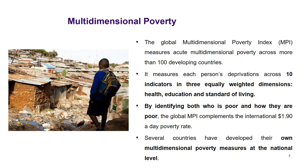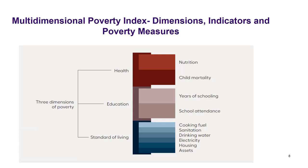By identifying both who is poor and how they are poor, the global MPI complements the international $1.90 a day poverty rate. Several countries have developed their own multidimensional poverty measures at the national level, because for one country education may be more important, for another health, for another housing — so it depends on the specificity of the country. The global MPI is used for comparison purposes, since using the same indicators and dimensions allows us to compare countries.